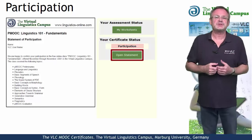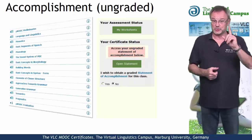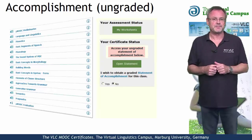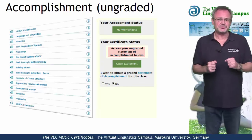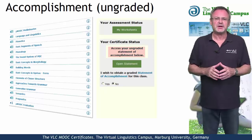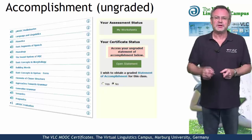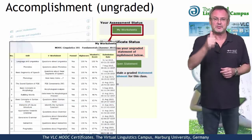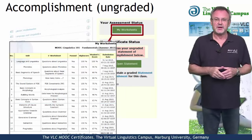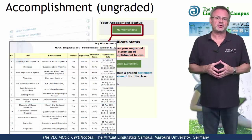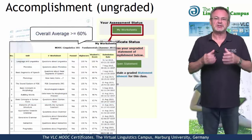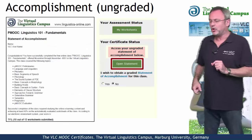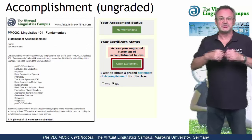The second option is the statement of accomplishment, also free and issued by the Virtual Linguistics Campus. To be given such a certificate, we not only want your regular participation, but we also want you to do the mastery worksheets — our electronic tests, one for each unit — and achieve an overall score of at least 60% across all worksheets. A simple click on the Open Statement button and the certificate is yours.